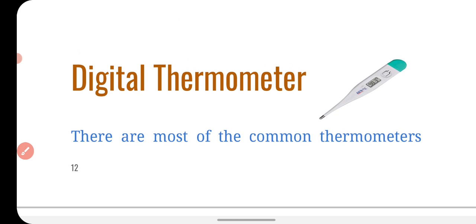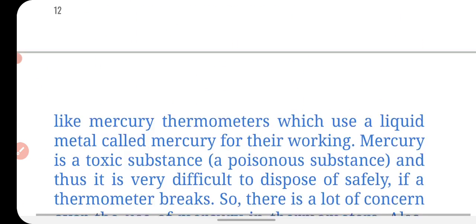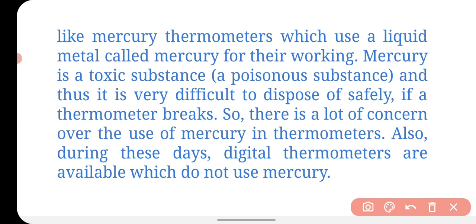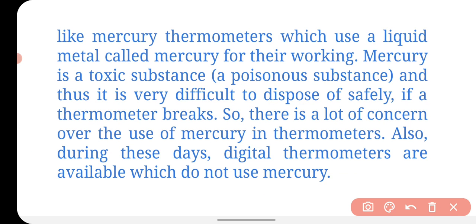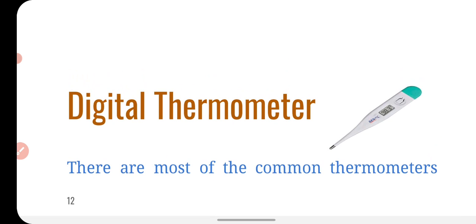Now let's talk about the digital thermometer, which is a very common and easy-to-use thermometer. Mercury is not used in it because mercury is a toxic and poisonous substance, difficult to dispose of and risky to handle. So the digital thermometer is safer and easier to use. This is all for this video. In the next video we will talk about another topic — the conduction of heat. Be good, do good, thank you.